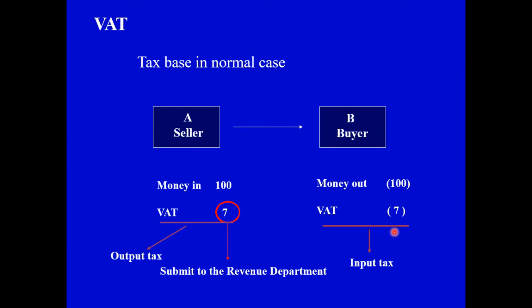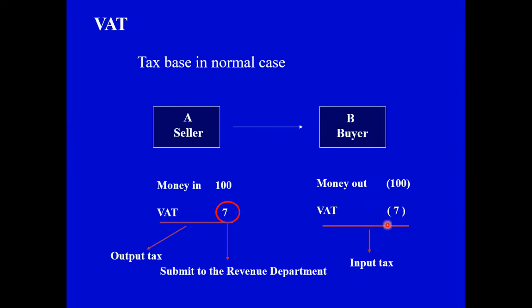B is also not treated as having an expense. However, if this transaction is generated from an entertainment expense or the service of a passenger car with seats not more than 10, which I have emphasized in this class — these are transactions where the VAT is not creditable in the VAT system under Sections 84 number 4 and number 6. The total of 107 baht will be recognized as the expense in the accounting transaction.